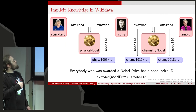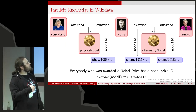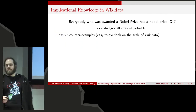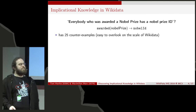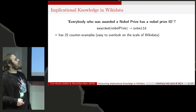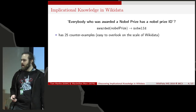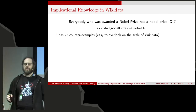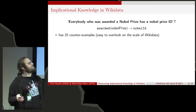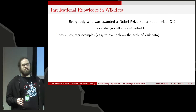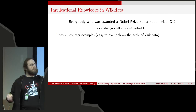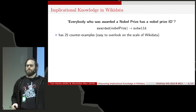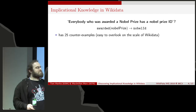If you look at this picture, there's an arrow conspicuously missing — Donna Strickland doesn't have a Nobel Prize ID. Indeed, there are 25 people currently on Wikidata missing Nobel Prize IDs, and Donna Strickland is one of them. We call these people who don't satisfy this implication 'counterexamples.'